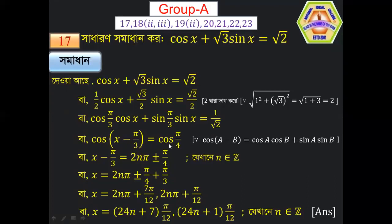We obtain cos(x − π/3) = 1/√2. This gives us the general solution for x using the cosine formula.